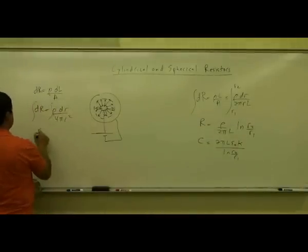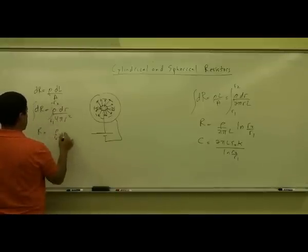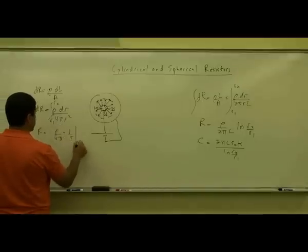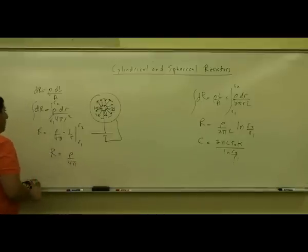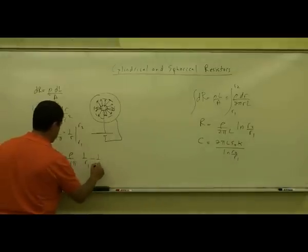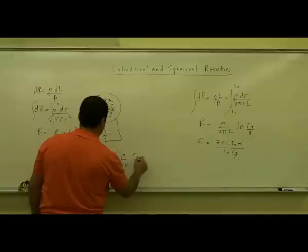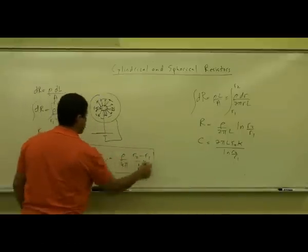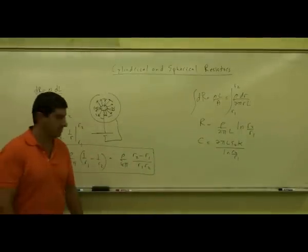Integrating from r1 to r2: R = (ρ / 4π) times the integral of dr/r², which gives negative 1/r evaluated from r1 to r2. This yields R = (ρ / 4π)(1/r1 − 1/r2) = (ρ / 4π) × (r2 − r1)/(r1 r2). So the bigger the difference between r1 and r2, the bigger the resistance.